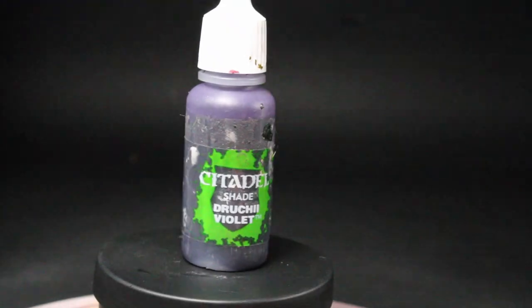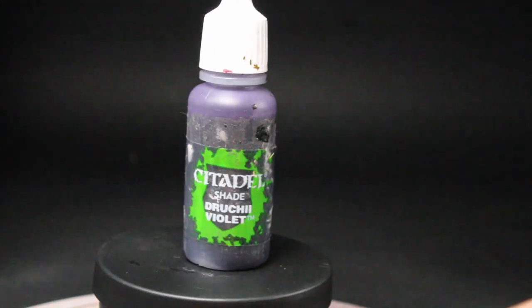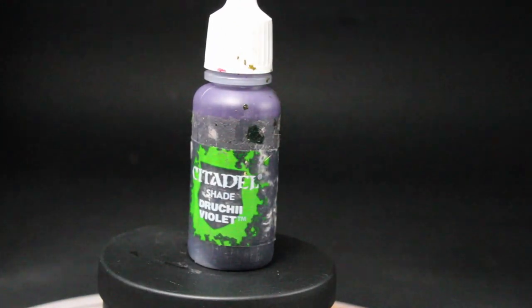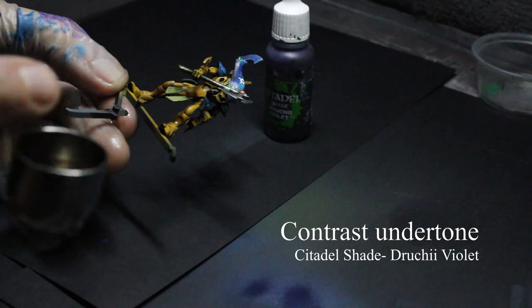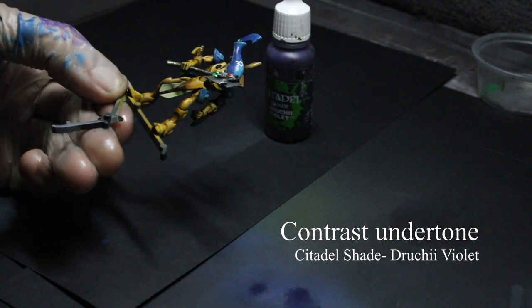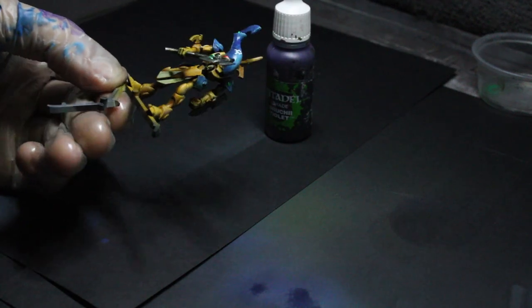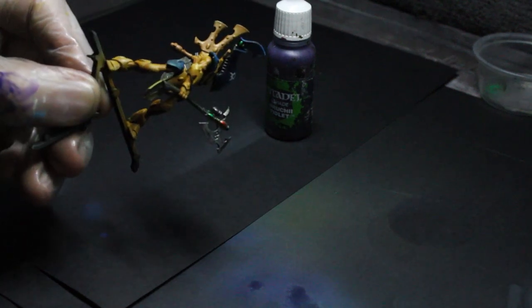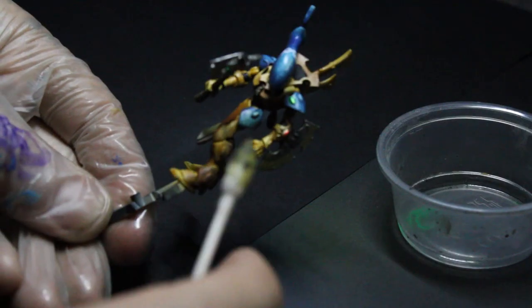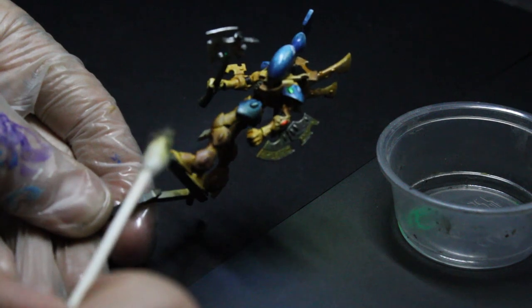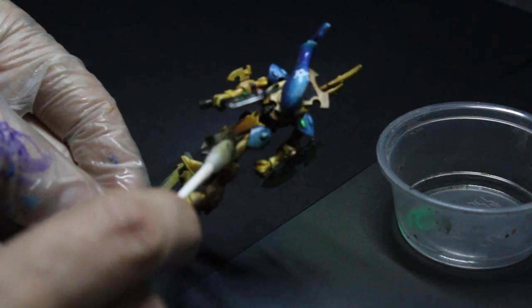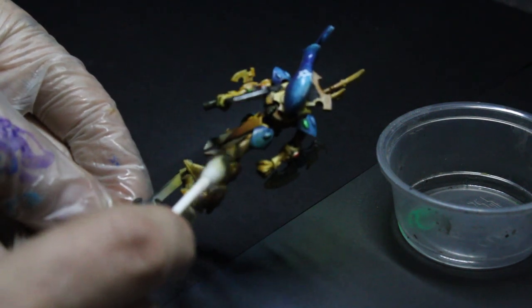Now apply Citadel's Druchi Violet with your airbrush at a very high PSI, around 30 or 40, from a very low angle. After that's dry, you can create a model defect with a cotton swab soaked with alcohol. Dab lightly so as not to remove too many layers of paint.